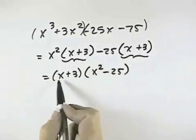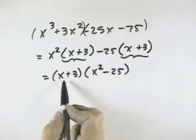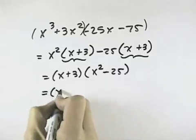Now the first factor has two terms. They're not squares or cubes, so I can't factor it any further. So we'll leave the first factor.